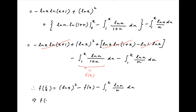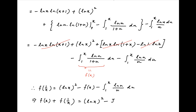Therefore f(x) + f(1/x) = ln²(x) − f(x) − j, where j is the integral from 1 to x of ln(u)/u du.